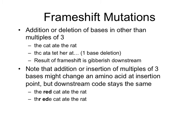Frame shift mutations happen when you have an addition or deletion of bases in other than multiples of three. For example, if you have the sentence 'the cat ate the rat' and you do a one-base deletion — like removing the E — it becomes gibberish, and the results of the frame shift do not make sense. However, the insertion of multiples of three bases might change the amino acid at the insertion point, but the downstream code always stays the same.